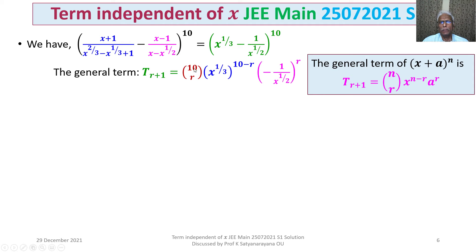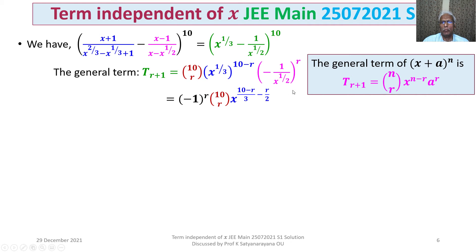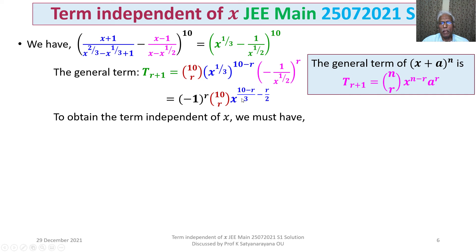Applying the general term to our binomial: T(r+1) = (−1)^r × 10Cr × x^((10−r)/3) × x^(−r/2). Here x^(1/3) is raised to the power (10−r), and 1/x^(1/2) raised to r gives x^(−r/2). Combining, the exponent of x is (10−r)/3 minus r/2.